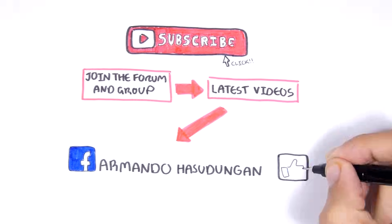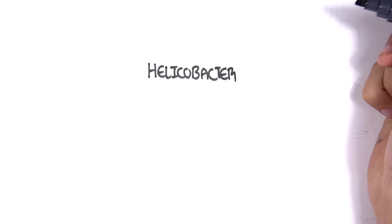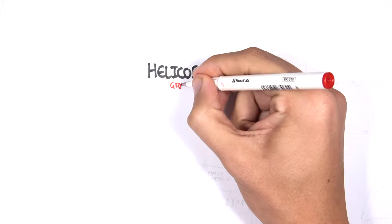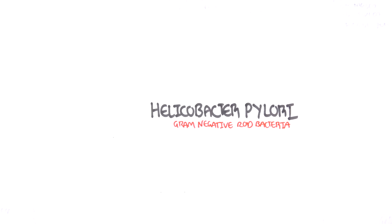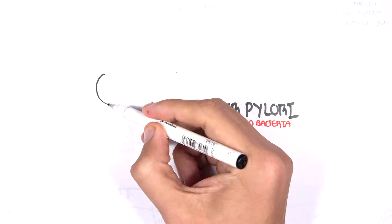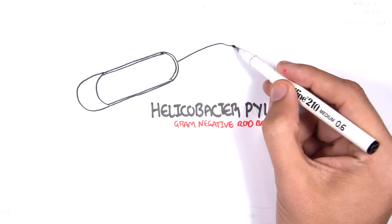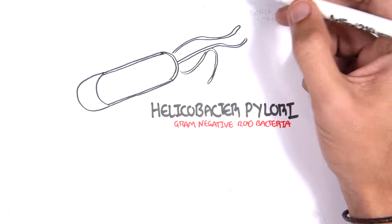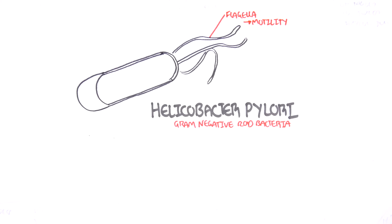In this video we're going to look at Helicobacter pylori, the bacteria known to cause peptic ulcers as well as duodenal ulcers. Helicobacter pylori is a gram-negative rod bacteria. Here I'm drawing a simplified structure of the bacteria. H. pylori has flagella which help in motility, and it also has circular DNA within it.